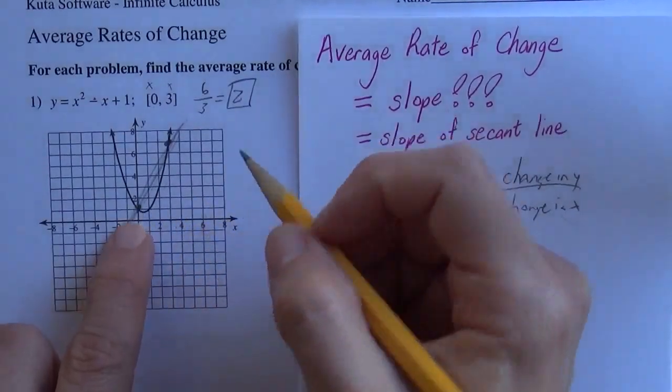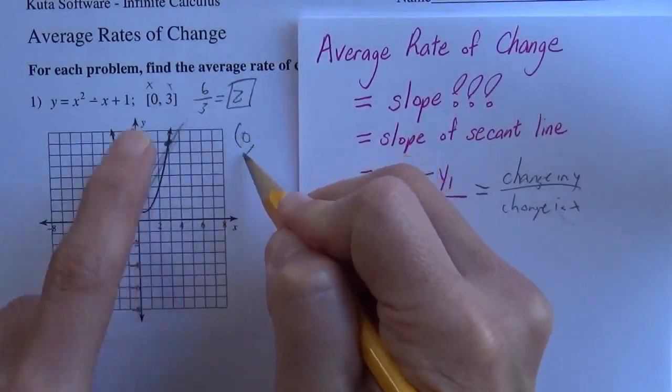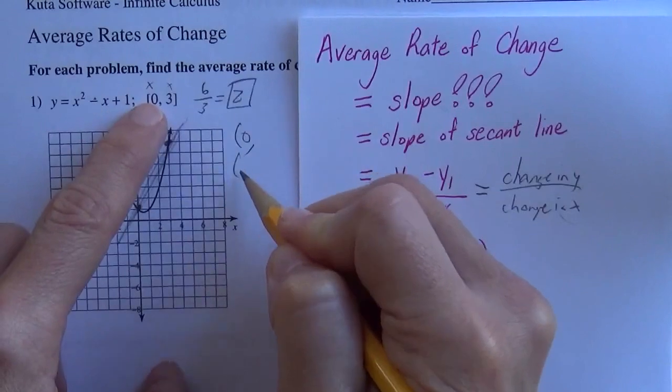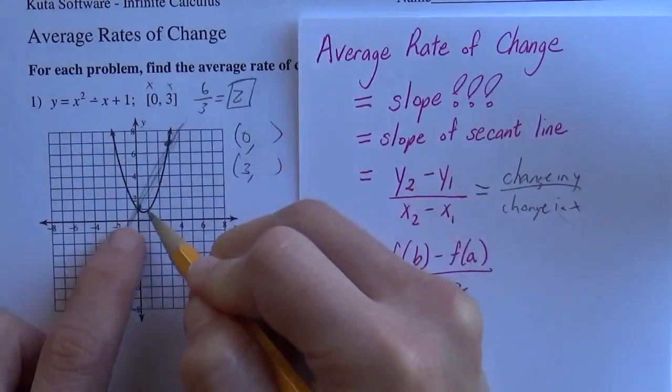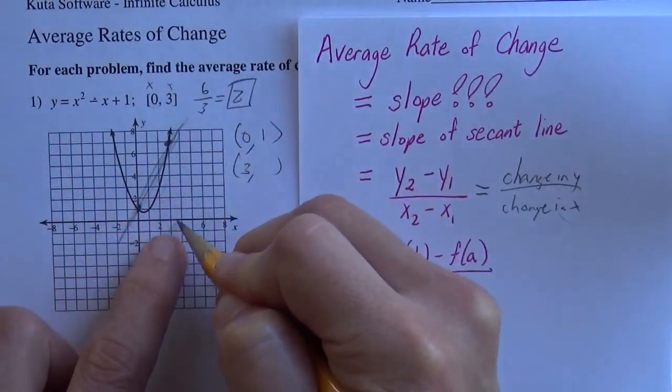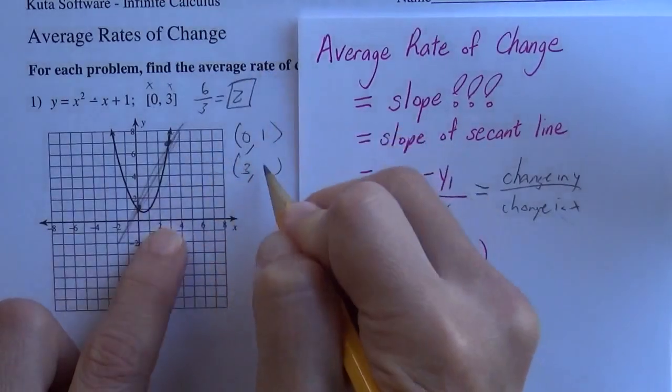I could get those ordered pairs. When x is 0, I want the ordered pairs 0 and 3. So when x is 0, the y is 1. When x is 3, the y is 7.